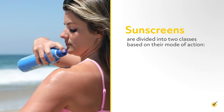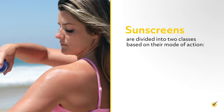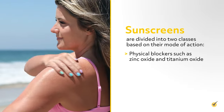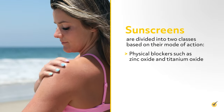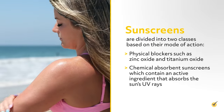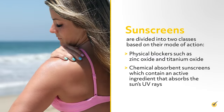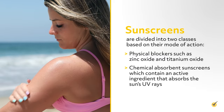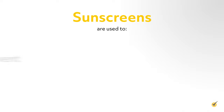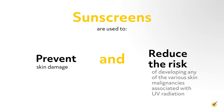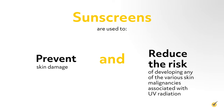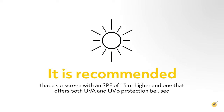Sunscreens are divided into two classes based on their mode of action: physical blockers such as zinc oxide and titanium oxide, and chemical absorbent sunscreens which contain an active ingredient that absorbs the sun's UV rays. Sunscreens are used to prevent skin damage and reduce the risk of developing skin malignancies associated with UV radiation. It is recommended that a sunscreen with an SPF of 15 or higher and one that offers both UVA and UVB protection be used.